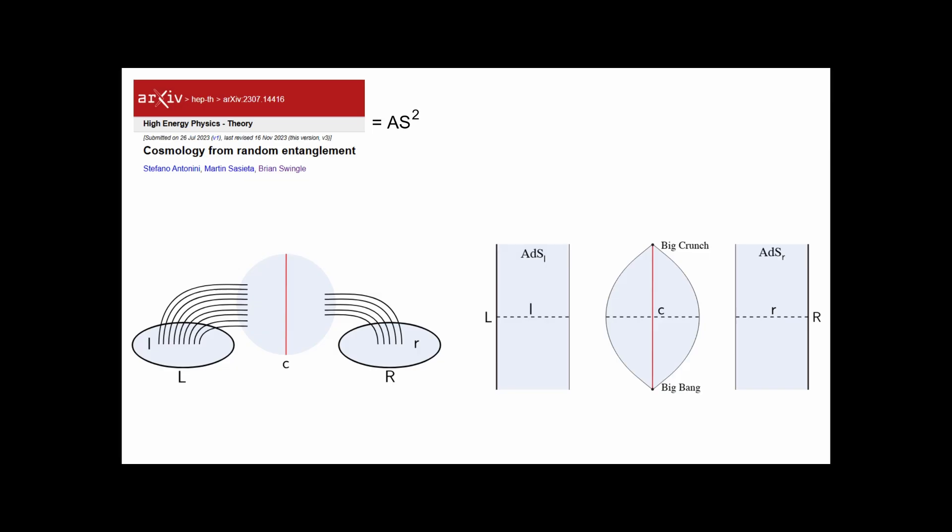We revisit a construction due to Antonini, Sassiata, and Swingle, which we refer to as AS-squared, that builds a closed cosmological universe using the tools of ADS-CFT.